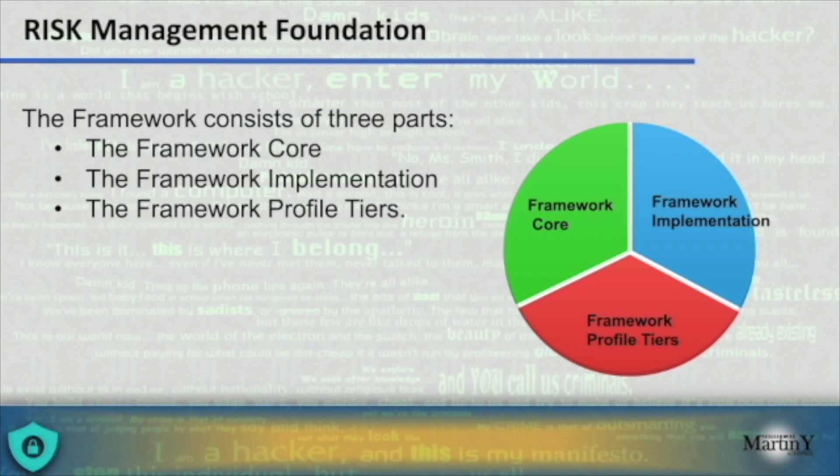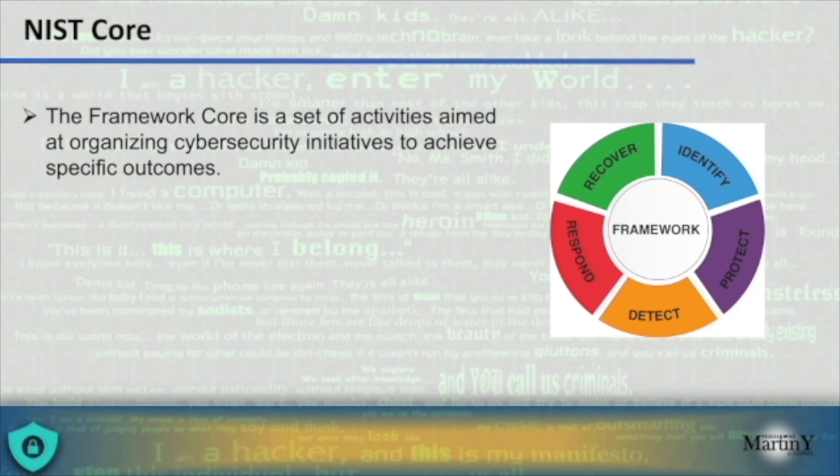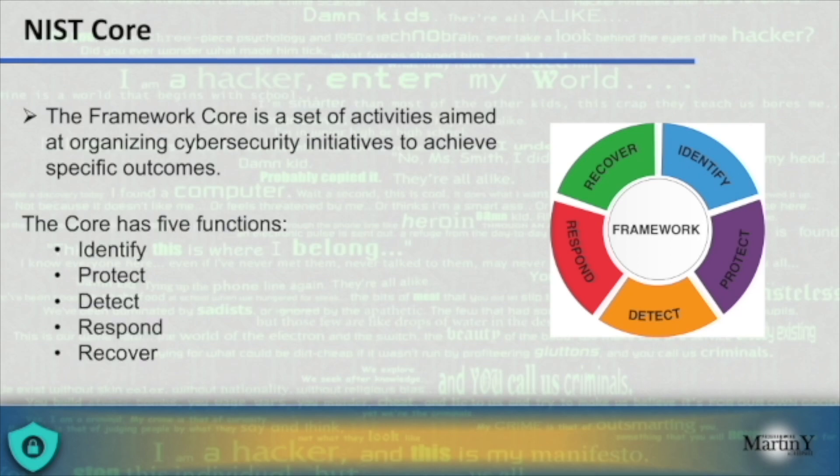The NIST Core is a set of activities aimed at organization cybersecurity initiatives to achieve specific outcomes. The core has five functions: identify, protect, detect, respond and recover. For each of those functions, there are specified categories of activities, and for each subcategory there are informative references — usually standards — for helping support the activities.